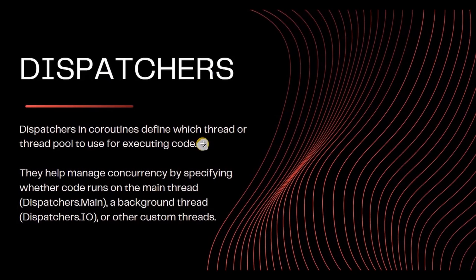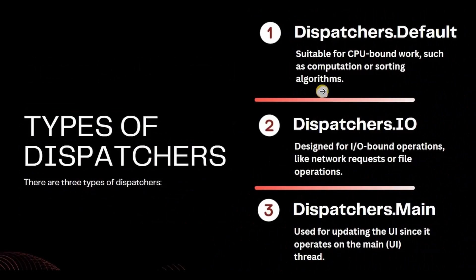Now let's see what are dispatchers. A dispatcher defines which thread to use for executing the code — like the main thread or background thread. There are three types of dispatchers.